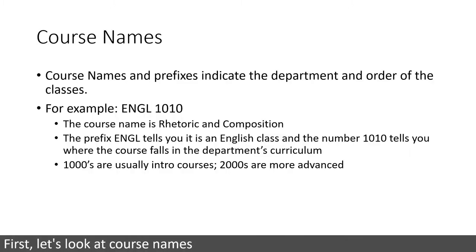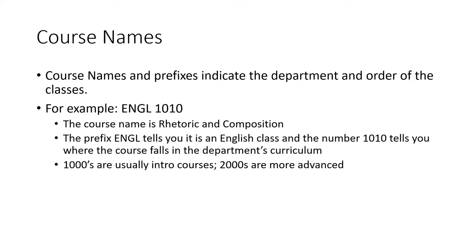First, let's look at Course Names. Course Names and Prefixes indicate the department and order of the classes. For example, English 1010 — the course name is Rhetoric and Composition. The prefix ENGL tells you it is an English class, and the number 1010 tells you where the course falls in the department's curriculum. One-thousands are usually intro courses; two-thousands are more advanced.